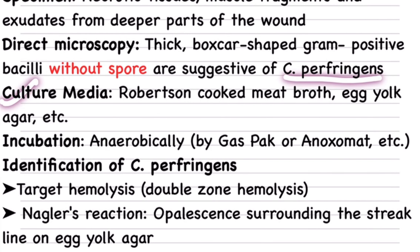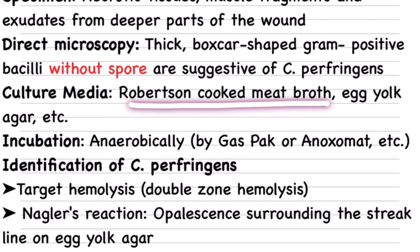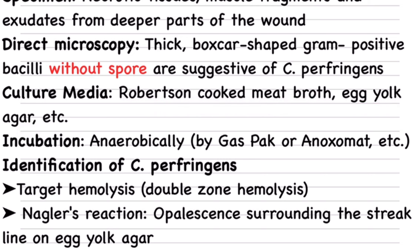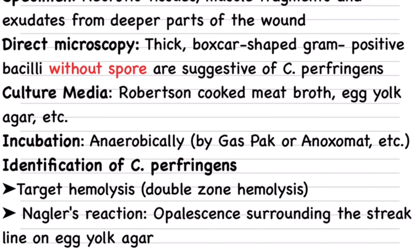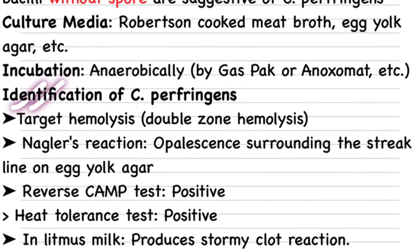A sero-sanguinous discharge with a very foul smell is released from the affected site, along with gas bubbles — also called crepitus — forming at or exuding from the deeper parts of the wound. For diagnosis, cotton swabs with exudate are not preferred. On direct microscopy, thick box-car shaped gram-positive bacilli without spores are seen — indicating Clostridium perfringens infection. Presence of spores indicates other agents such as Clostridium novyi or Clostridium septicum. Anaerobic culture media such as Robertson's cooked meat broth, blood agar, and neomycin blood agar are used, incubated anaerobically using gas pack and Macintosh–Fildes anaerobic conditions.